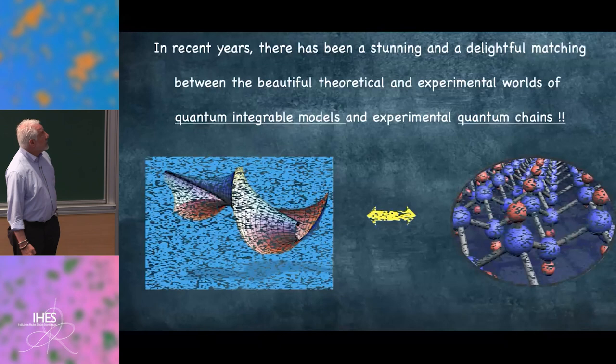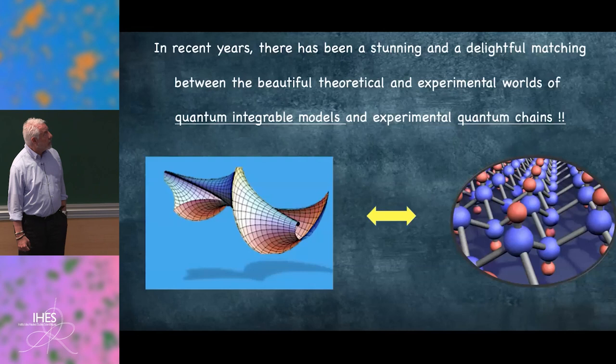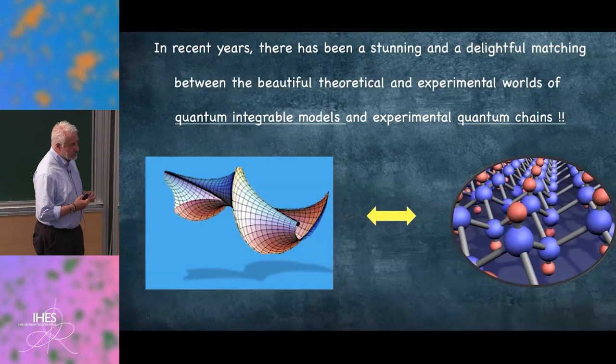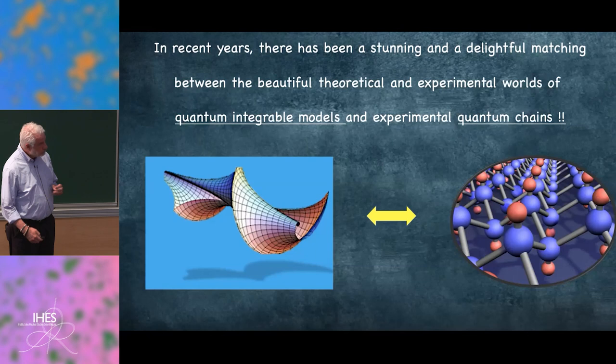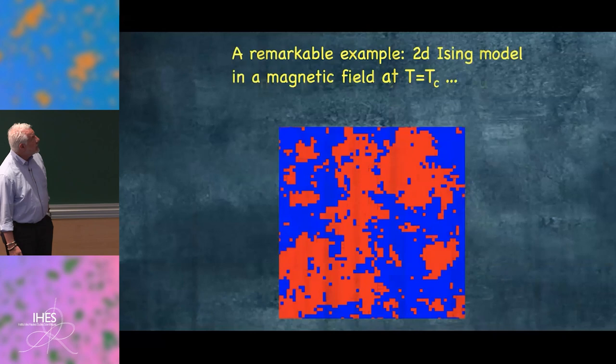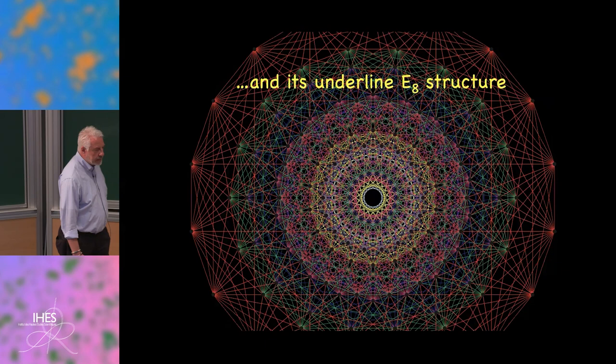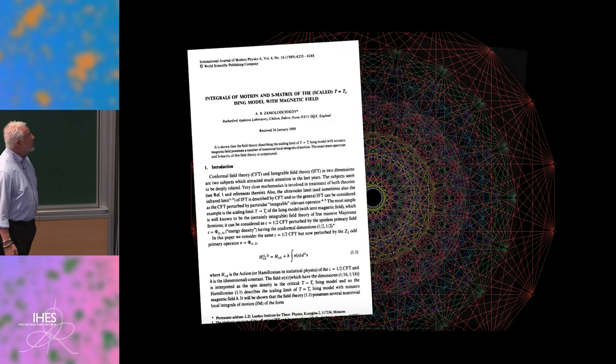In recent years, there has been a stunning and delightful matching between beautiful theoretical and experimental work in the field of integrable field theory, and the experimental realization mostly in terms of quantum chains. A remarkable example is the two-dimensional Ising model in a magnetic field, and in particular its underlying E8 structure.